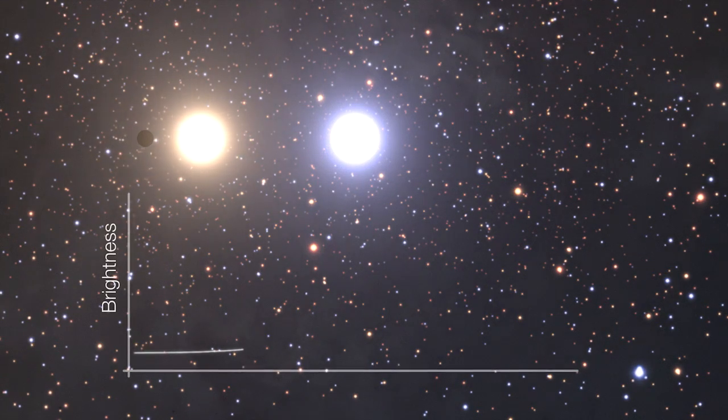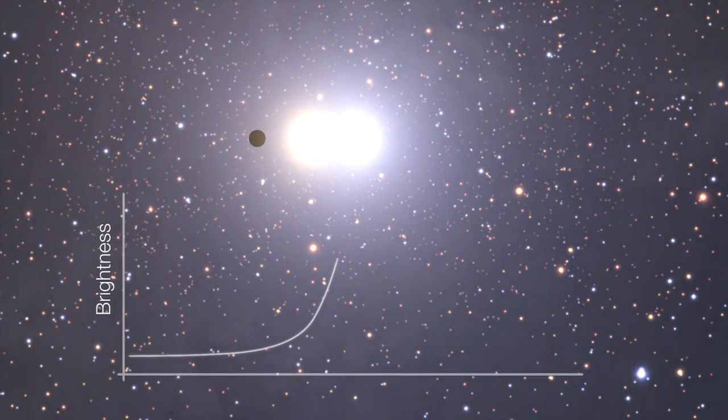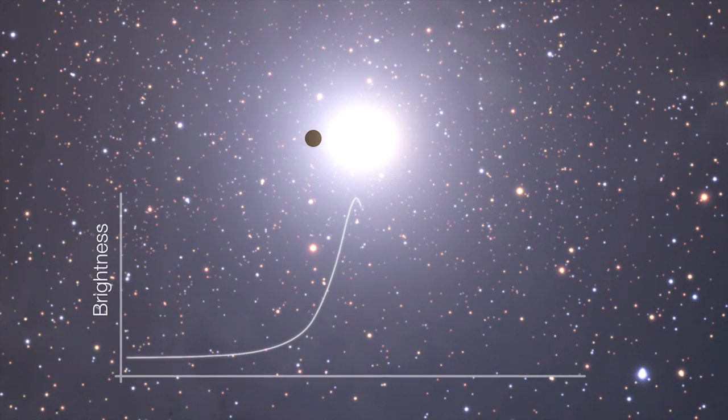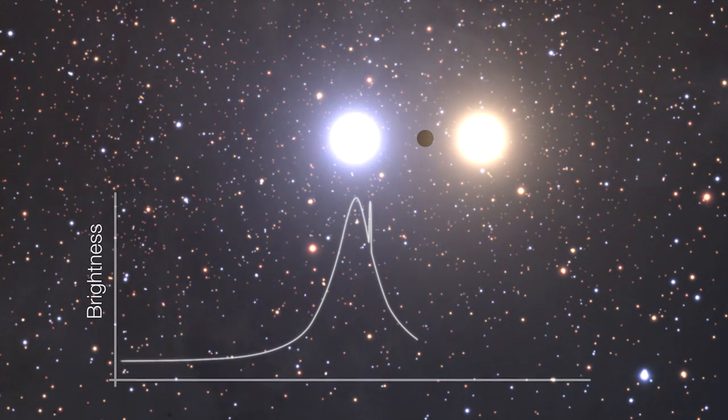The trick? Gravitational microlensing. The planet and its parent star passed in front of a brighter star in the background, magnifying its image.